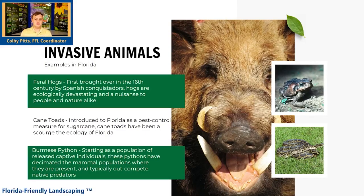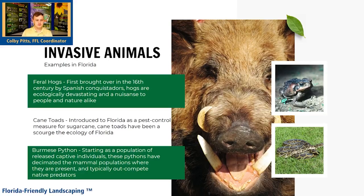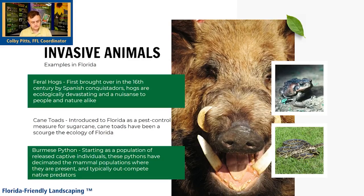Cane toads are one you might actually see in your yard. You can dispatch them — the humane way I was told is to freeze them — but I wouldn't go touching one. And everyone's heard the news stories: we have pythons down in the Everglades. Those are bad. They've had a really huge effect on the area. If you see a python, definitely call animal control. They've taken a huge toll on the small mammal population down south, and they're creeping north the same way invasive species typically spread until they can't anymore. Florida's warm and has a lot of water, so they're moving.